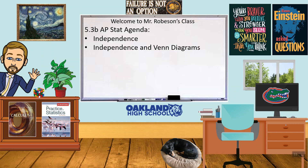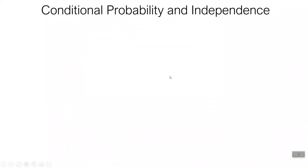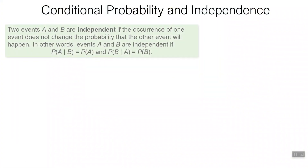Hi folks, Mr. Robeson here — Statistics. We are looking at independence today, and we're going to look at independence in either Venn diagrams or two-way tables, or probably both. There are just two examples and one definition here, so this should be a much shorter one than the last one. So: conditional probability and independence.